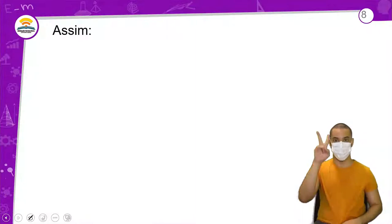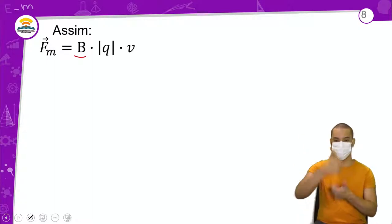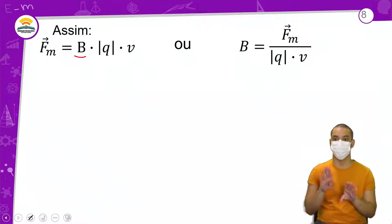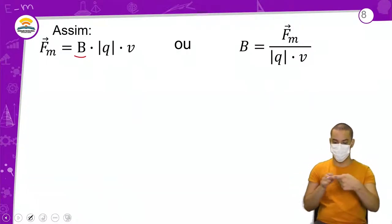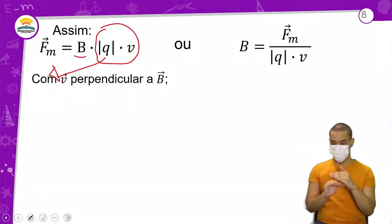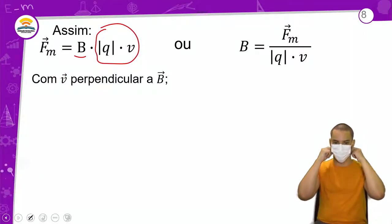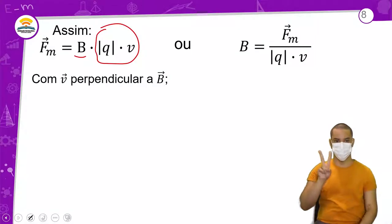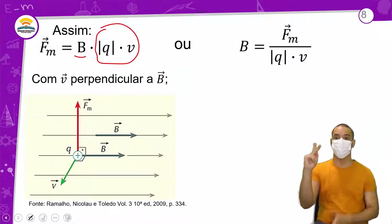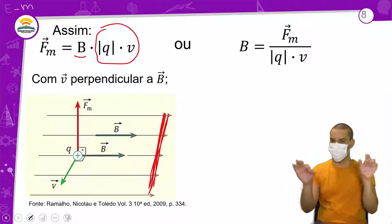Substituindo o B: B é igual à força magnética dividida pelo módulo da carga vezes V. Lembra que tudo que está multiplicando o B passa dividindo. Com V perpendicular a B, fazendo um ângulo de 90 graus, isso é como a tela da TV — ela é o plano. Descendo na tela teria a velocidade, e na horizontal estaria o campo passando por dentro da TV.